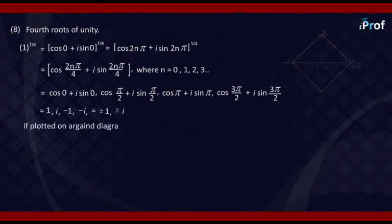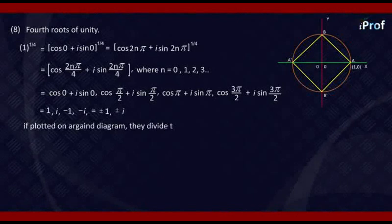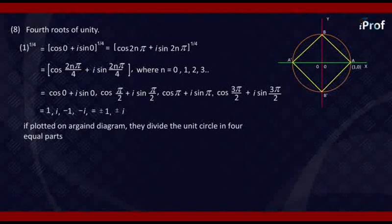If we plot them on the Argand diagram, they divide the unit circle into four equal parts. They form a square on the unit circle.